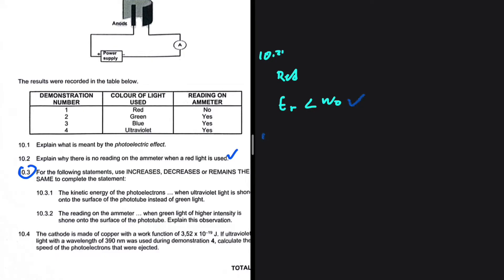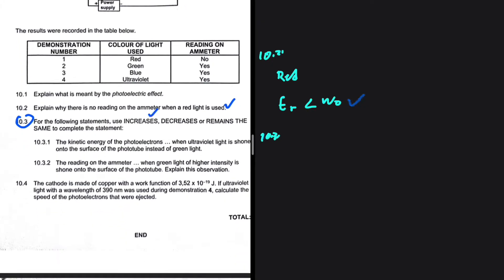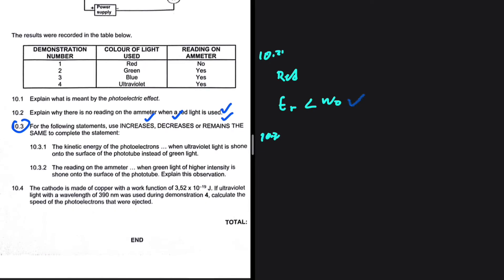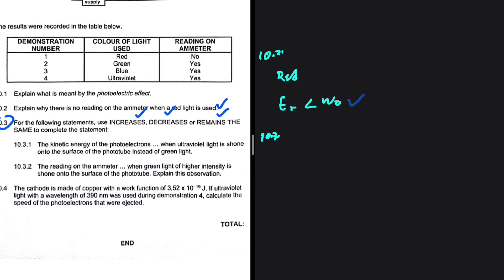For 10.3, the interesting equation, we use increase, decrease, or remains the same to complete each statement. For 10.3.1: the kinetic energy of the photoelectrons when ultraviolet light is shone onto the surface instead of green light — the kinetic energy is going to increase. We fill in 'increases' for that equation.